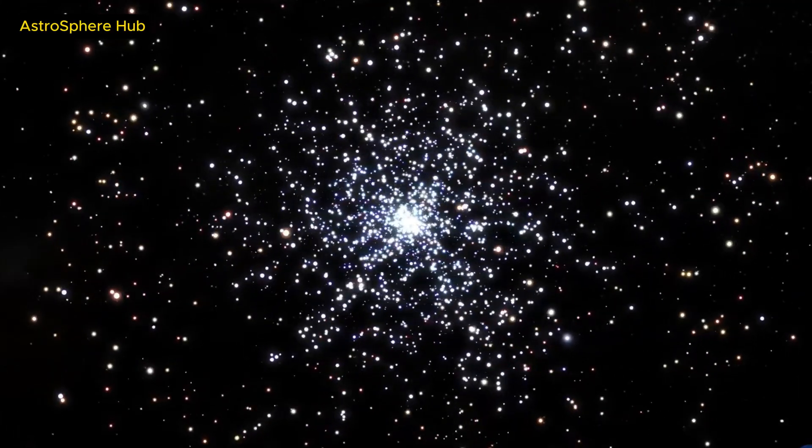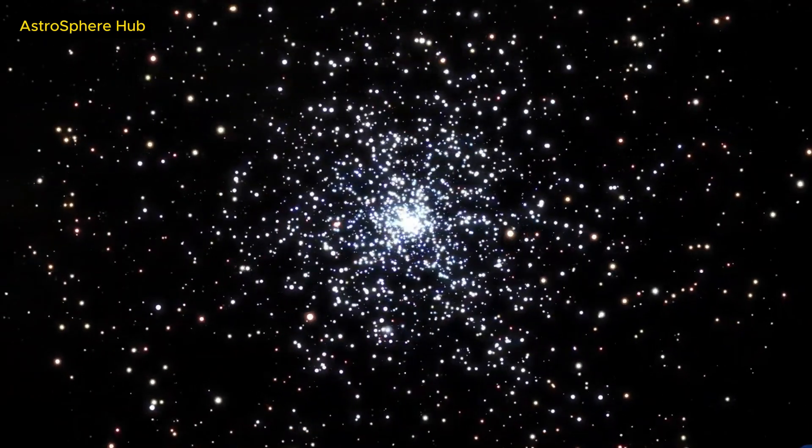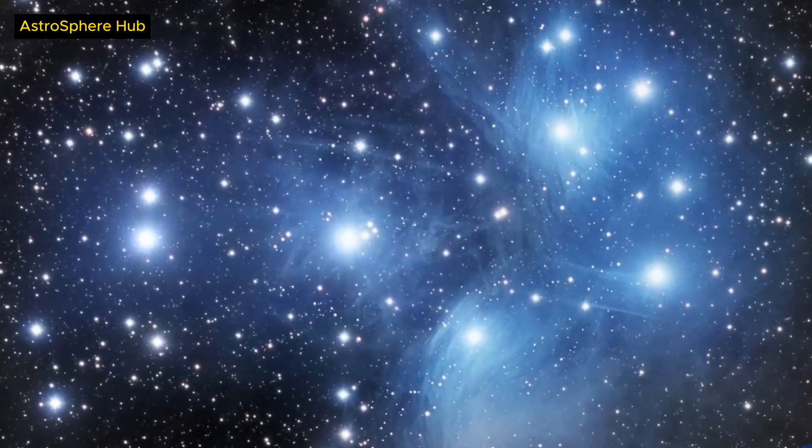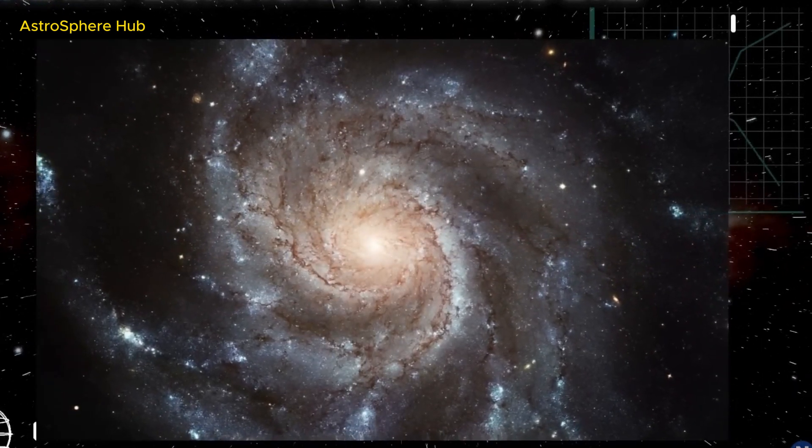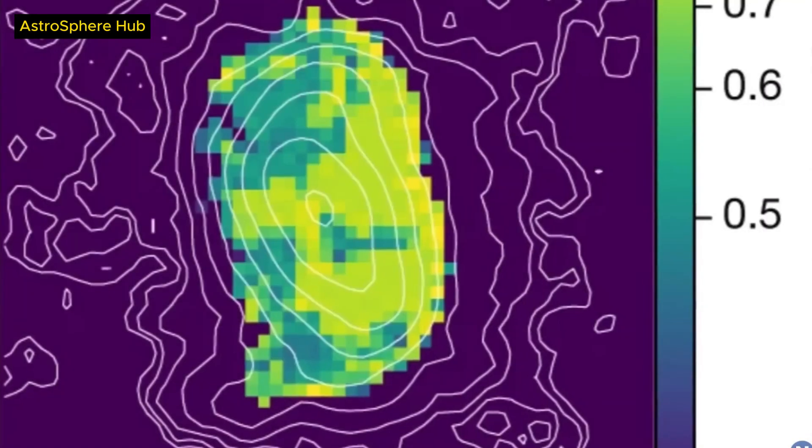This companion galaxy is smaller and fainter than the main galaxy, with a mass of about 1 billion solar masses and a size of about 0.5 kiloparsecs, or 1,600 light-years.